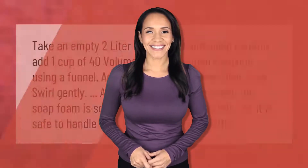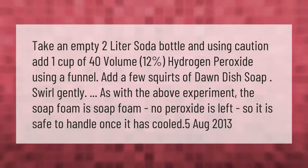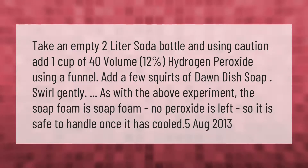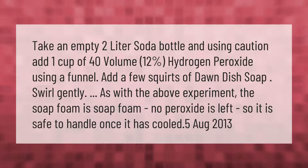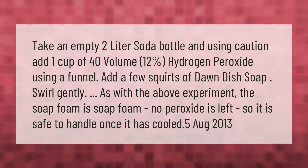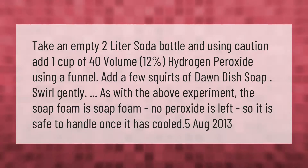Take an empty 2-liter soda bottle and, using caution, add 1 cup of 40-volume 12% hydrogen peroxide. Using a funnel, add a few squirts of Dawn dish soap and swirl gently. The soap foam produced contains no peroxide, so it is safe to handle once it has cooled.